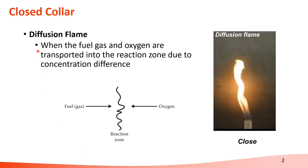When we close the collar of the Bunsen burner, it will generate a diffusion flame, just like shown in the picture. We will have some yellow flames and a shaking shape. So what is the diffusion flame? The diffusion flame is occurred when the fuel gas and oxygen are transported into the reaction zone due to concentration differences.